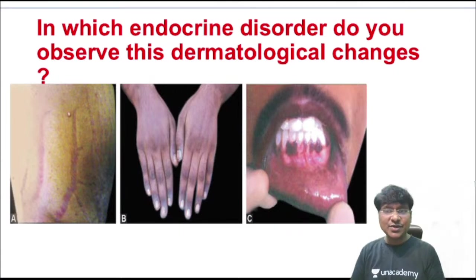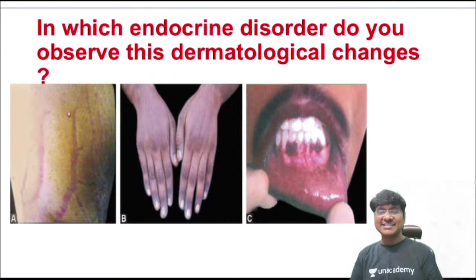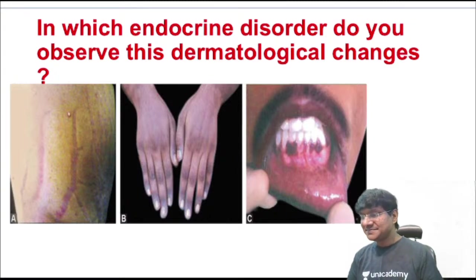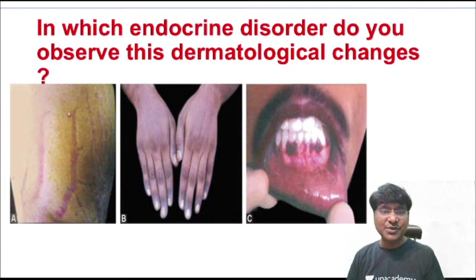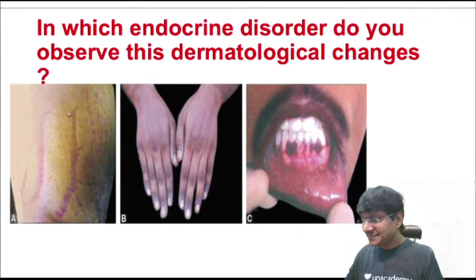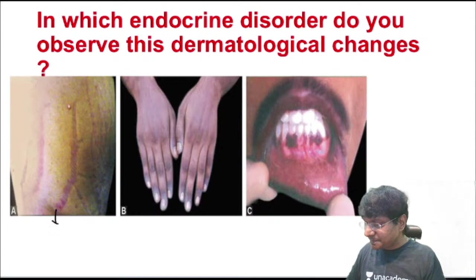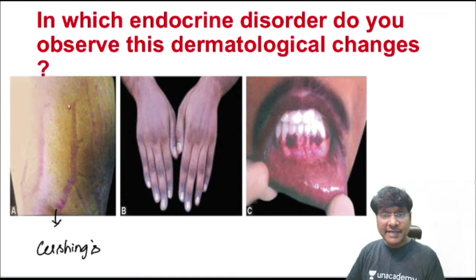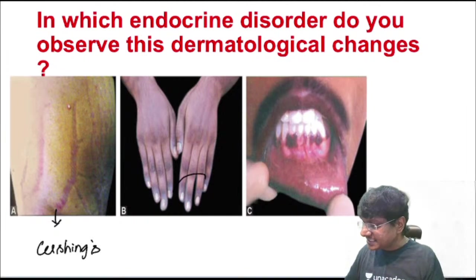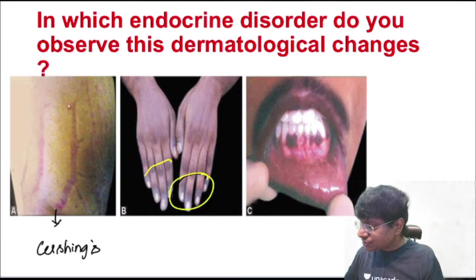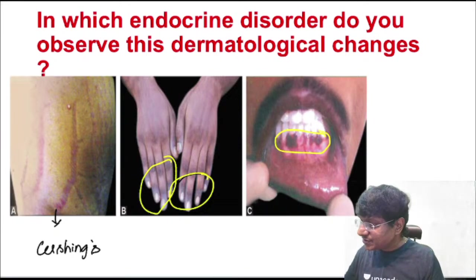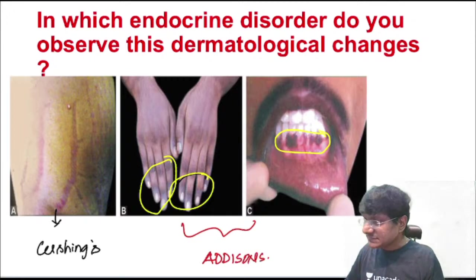Dermatological images: purple striae is seen in Cushing's. Knuckle pigmentation and mucous membrane pigmentation are seen in Addison's disease.